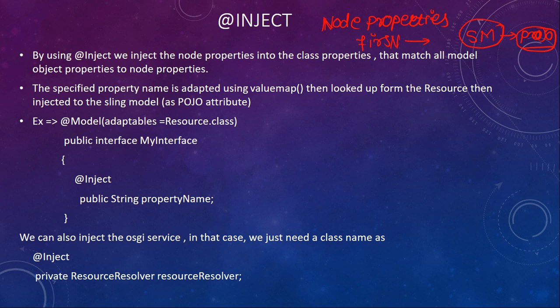In a Sling Model you can simply create a variable and store whatever value you want. It is entirely annotation-driven, meaning you can achieve everything using annotations. For example, if you want to inject properties from CRX/DE into a Sling Model — into your Java class — we have the @Inject annotation for that.